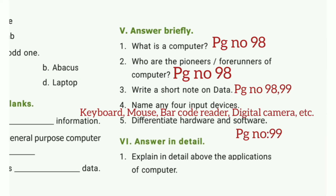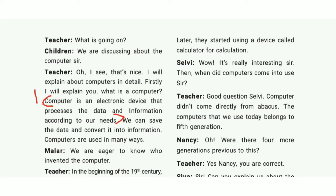Answer briefly. First one: What is a computer? Take page number 98. Computer is an electronic device that processes the data and information according to our needs.